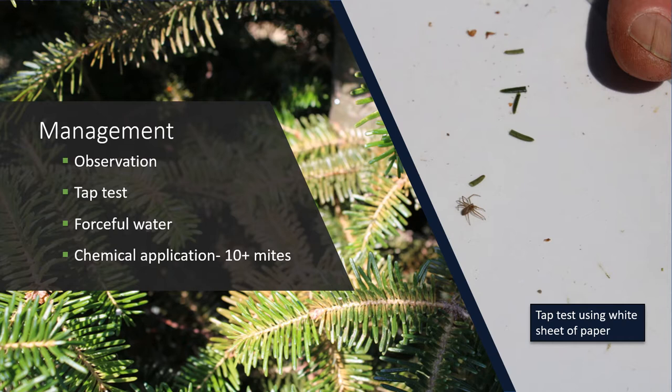If you notice your trees looking speckled, yellowish in appearance and lacking that rich green color, you may want to take a closer look. Using the same technique as for the balsam twig aphid, tap branches over white paper. This should dislodge the mites, and even though they are only 0.5 millimeters long, you should be able to see the dark oval spider mites against the white background. Examine three to four places around the plant. If you dislodge ten or more mites at each site, it would be advisable to apply a registered miticide according to label directions. Sprays containing insecticidal soap, horticultural oils, or specific miticides are effective controls.